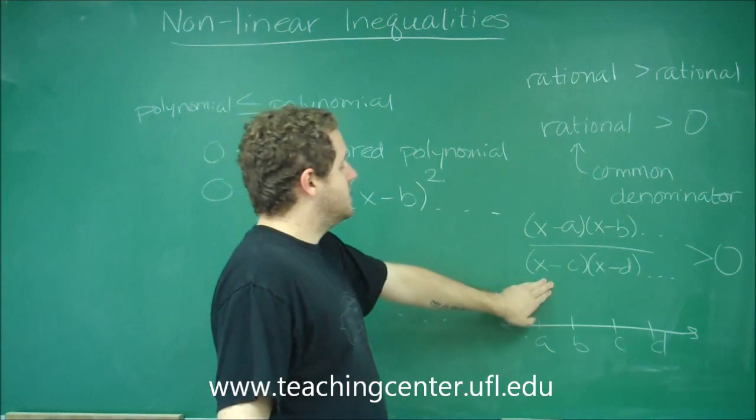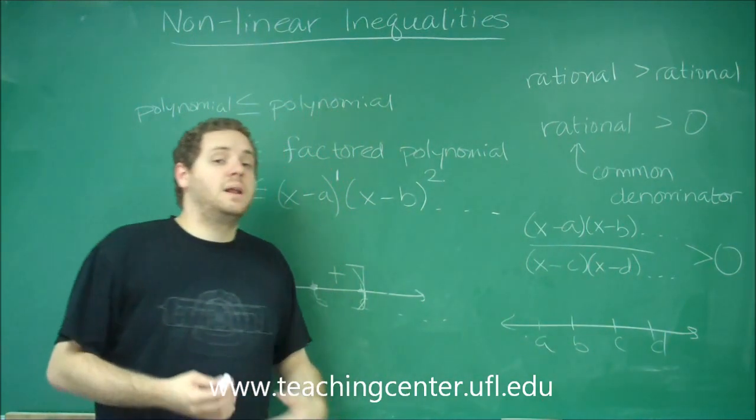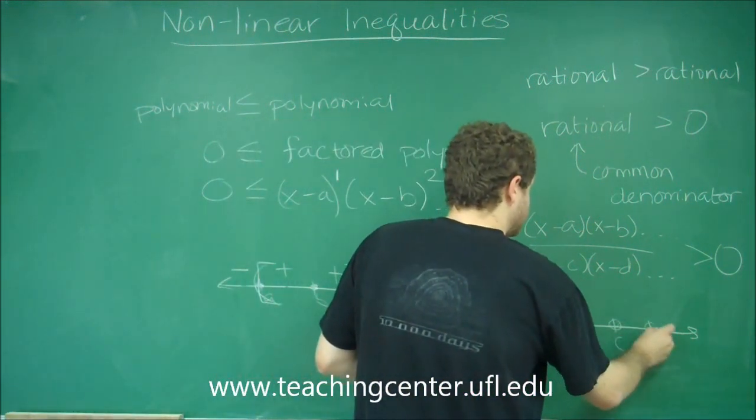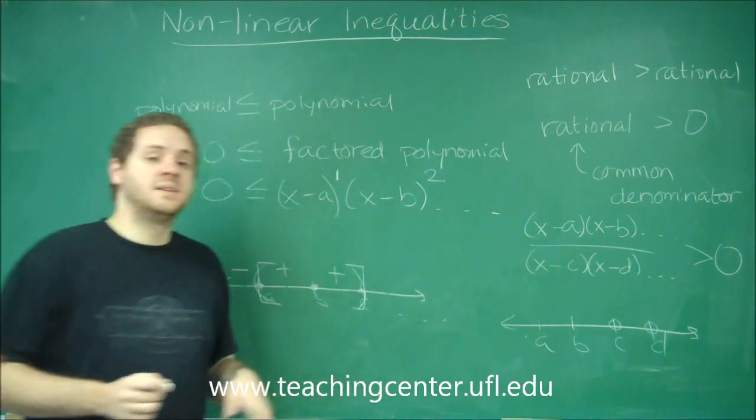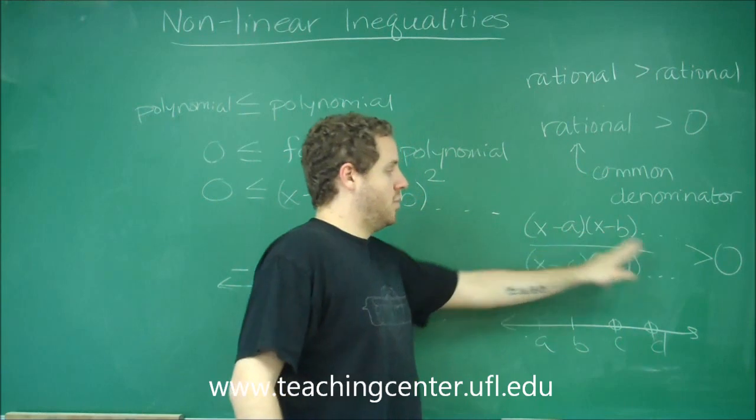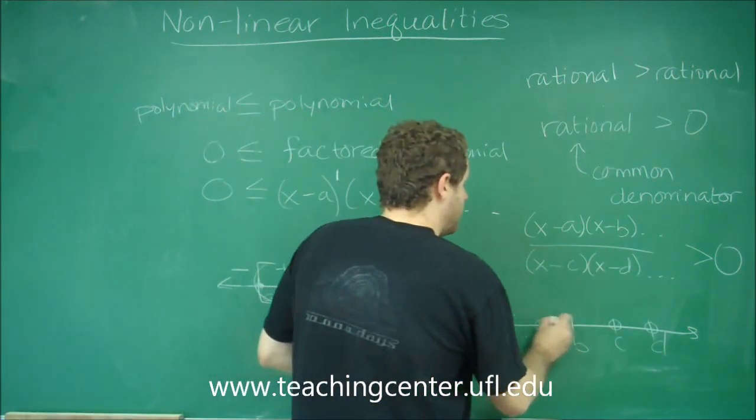Now, anything that's on the bottom, and the way I wrote this one here, is c and d, those would be dividing by zero, so they're definitely not going to work. You're going to have open circles on those. In this case, since it's a strict inequality, if the top was zero, so if we had a or b, that wouldn't work either because we would get zero. So in this case, all of them would be open circles.